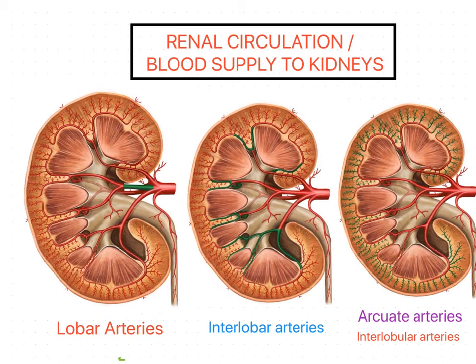The outer cortex is divisible into two parts: one is the cortical arches or cortical lobules, which form the caps of the renal pyramids, and the second part is the renal columns, where the cortex dips in between the pyramids. Each pyramid along with its overlying cortical arch is called a lobe of the kidney.